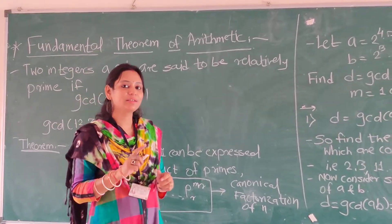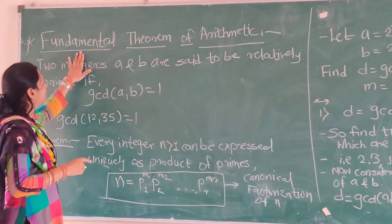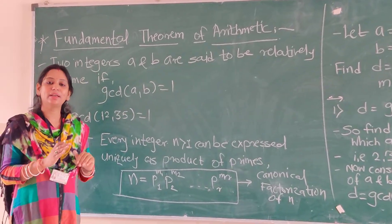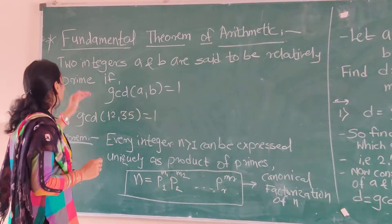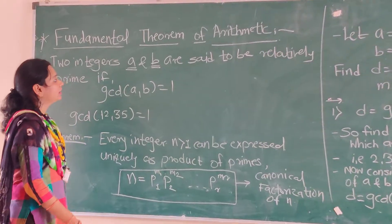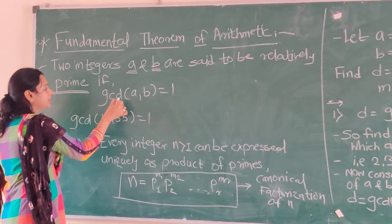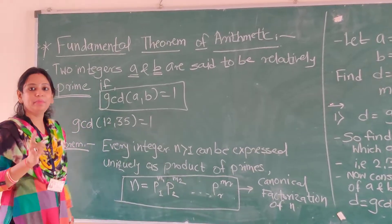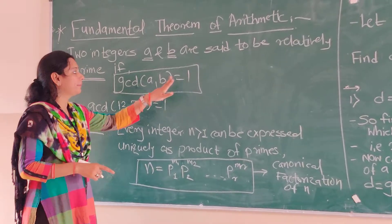In our last section we saw the Euclidean algorithm. Today in this section we will see the Fundamental Theorem of Arithmetic, which is also based on GCD — that is, the greatest common divisor. Suppose we are having two integers a and b. They are said to be relatively prime if the GCD of a and b is equal to 1.